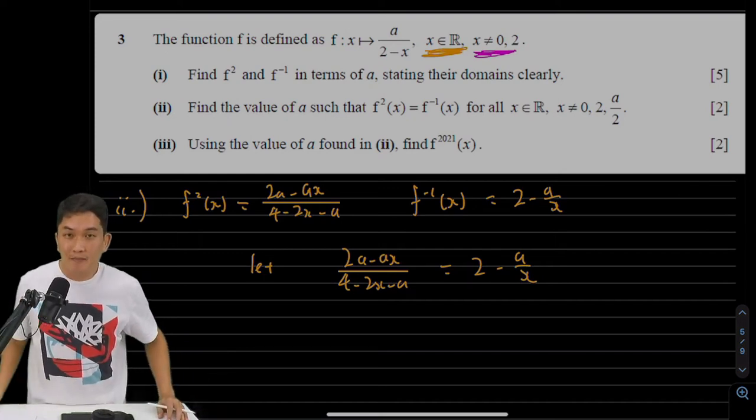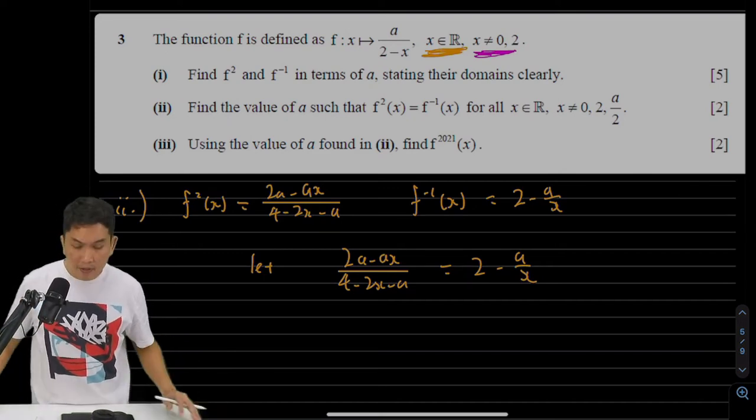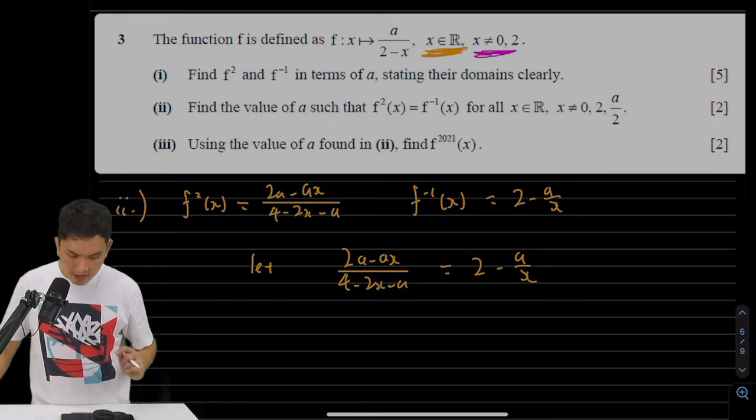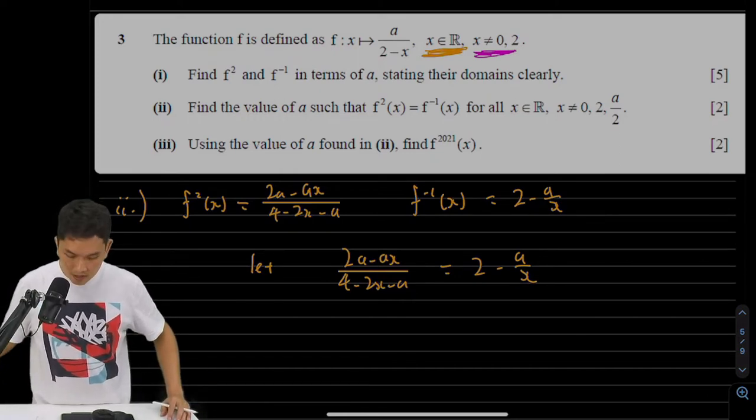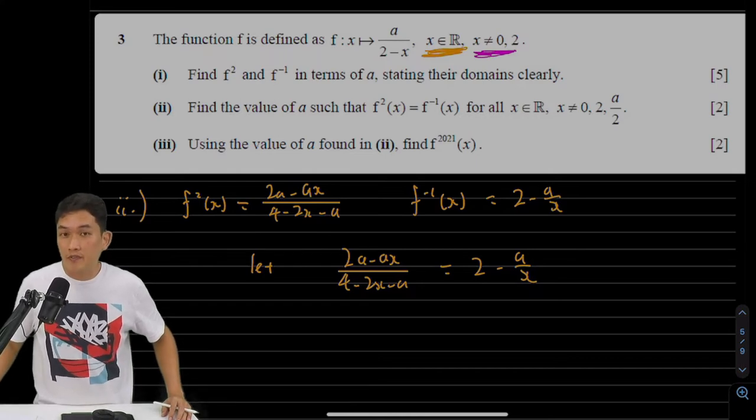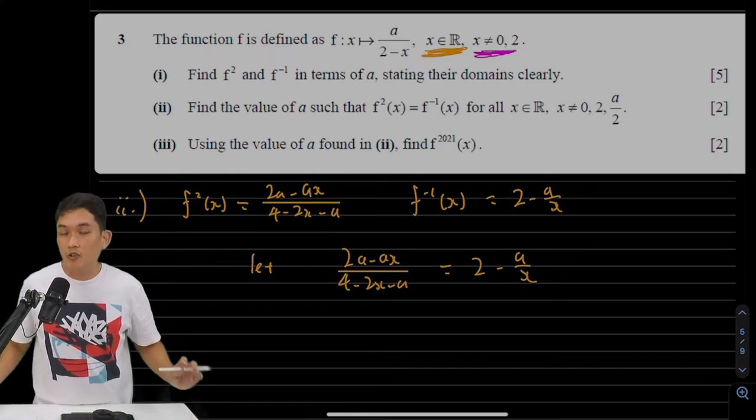Hello and welcome back to question 3 part 2. Now in part 2, it says that there is such a value of a such that f squared equals f inverse no matter the value of x.